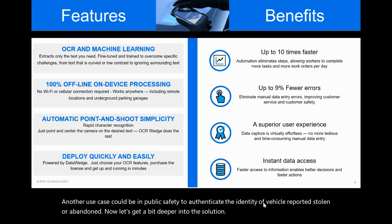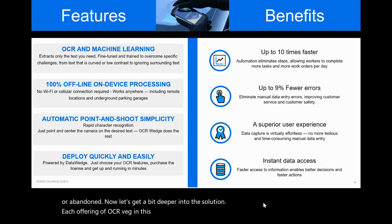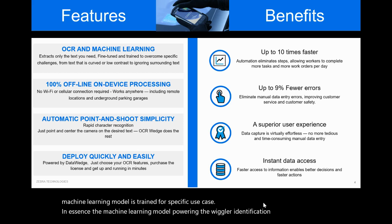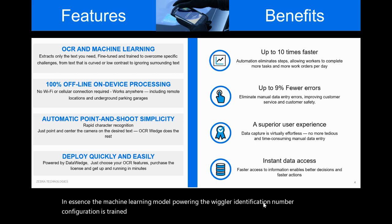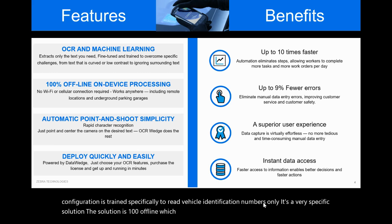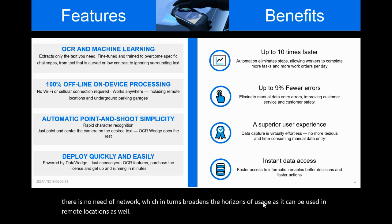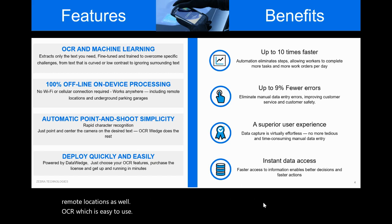Each offering of OCR Wedge — in this case, vehicle identification number — is fine-tuned and the machine learning model is trained for a specific use case. In essence, the machine learning model powering the vehicle identification number configuration is trained specifically to read vehicle identification numbers only. It's a very specific solution. The solution is 100% offline, which means all the processing is on-device and there is no need for network connectivity, which broadens the horizons of usage as it can be used in remote locations as well.